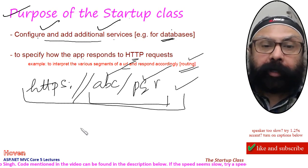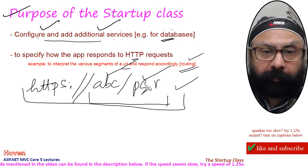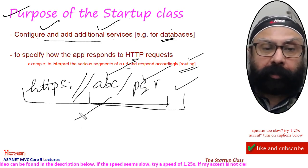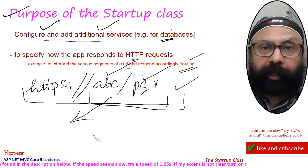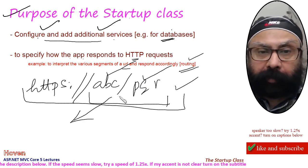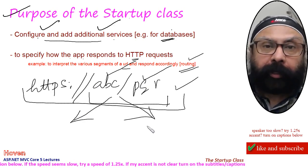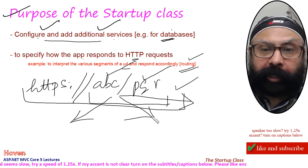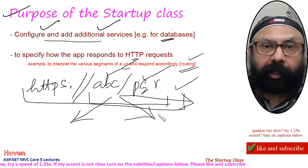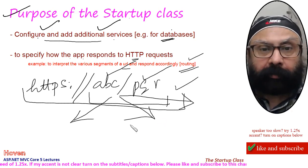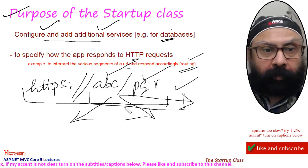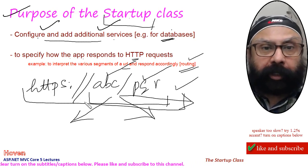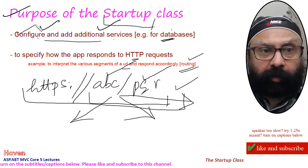That is, what happens when a customer types something in the URL — whether you are to respond by sending a web API response, by downloading a file, by sending some string of data, some JSON, or whatever. So this is a very important class and it will help you perform these objectives.